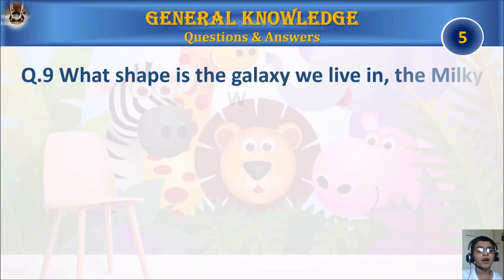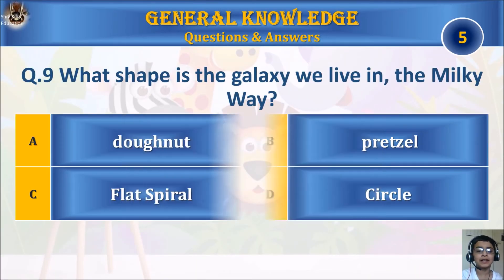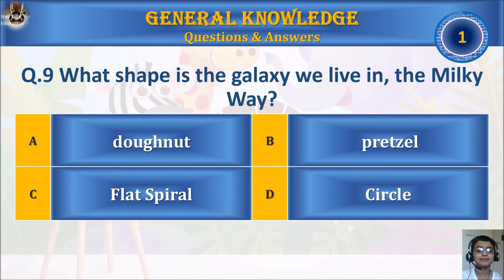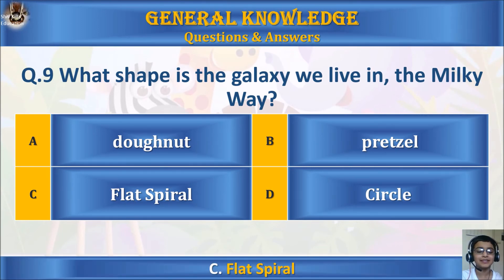Question 9: What shape is the galaxy we live in, the Milky Way? A: doughnut. B: pretzel. C: flat spiral. Or D: circle. Your time starts. The answer is C: flat spiral.